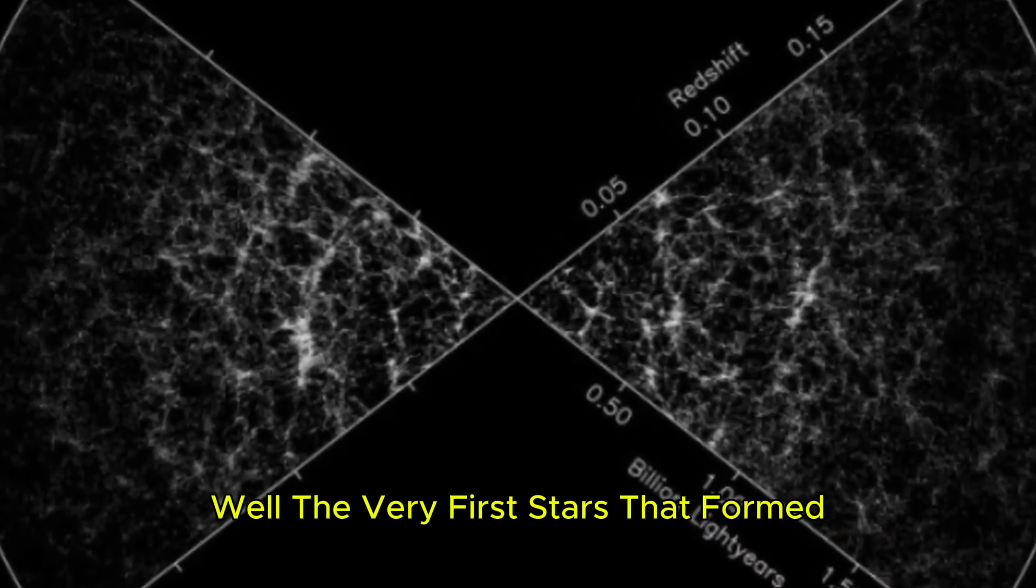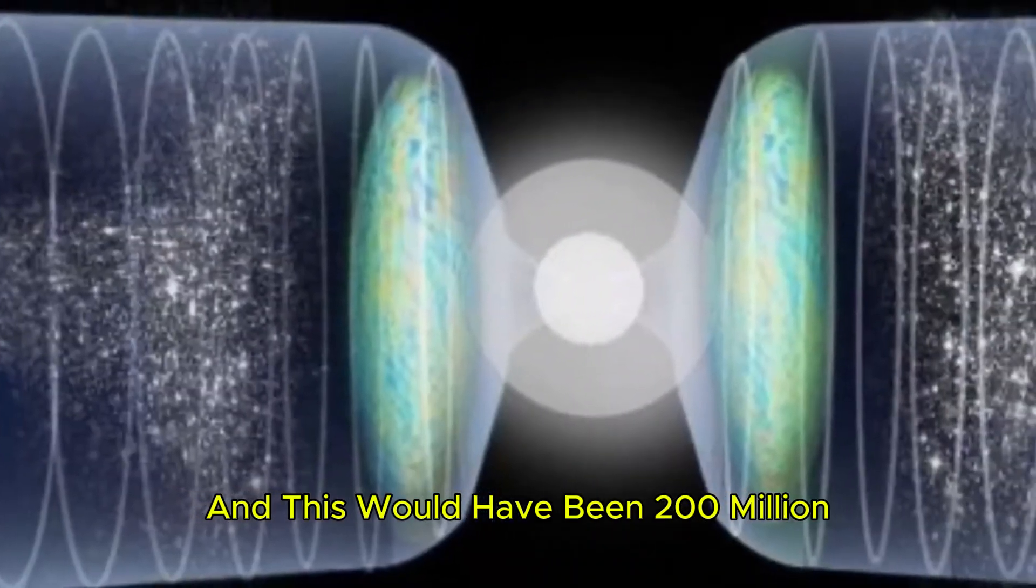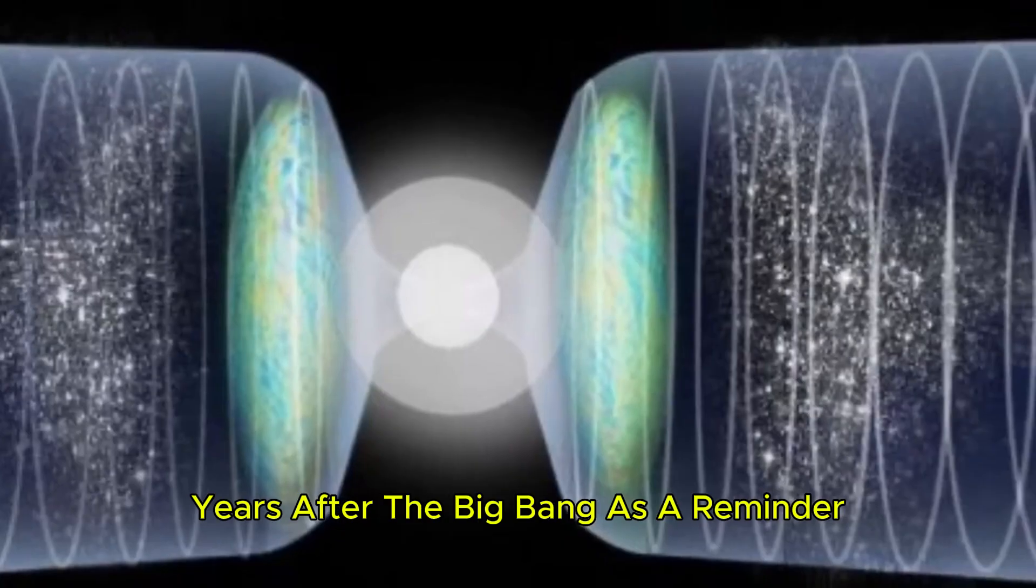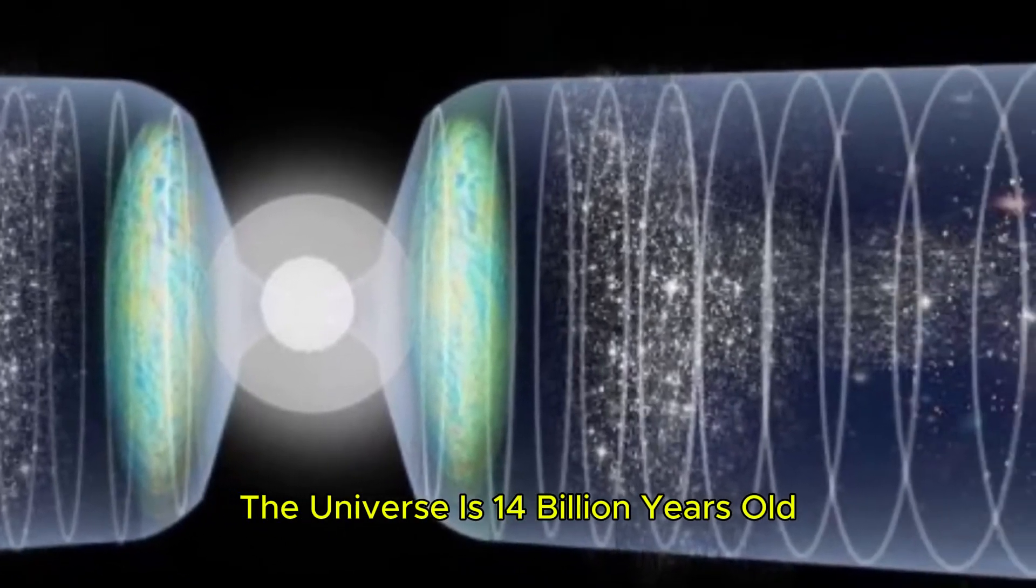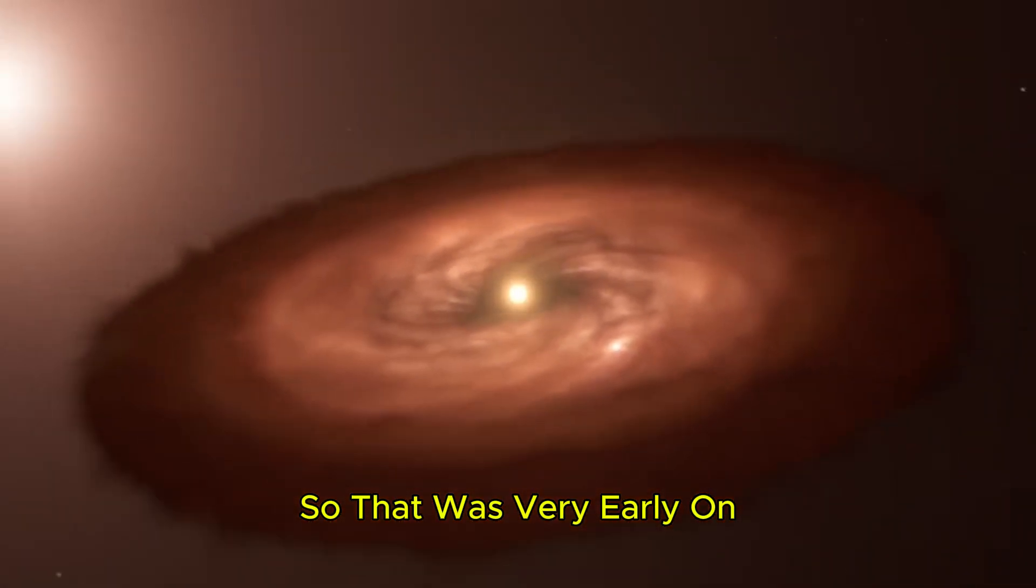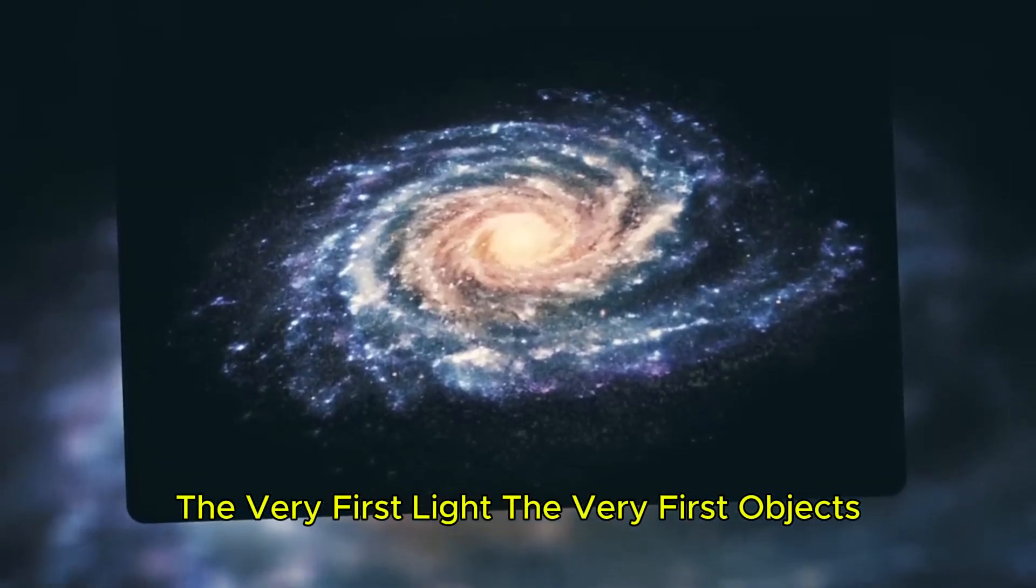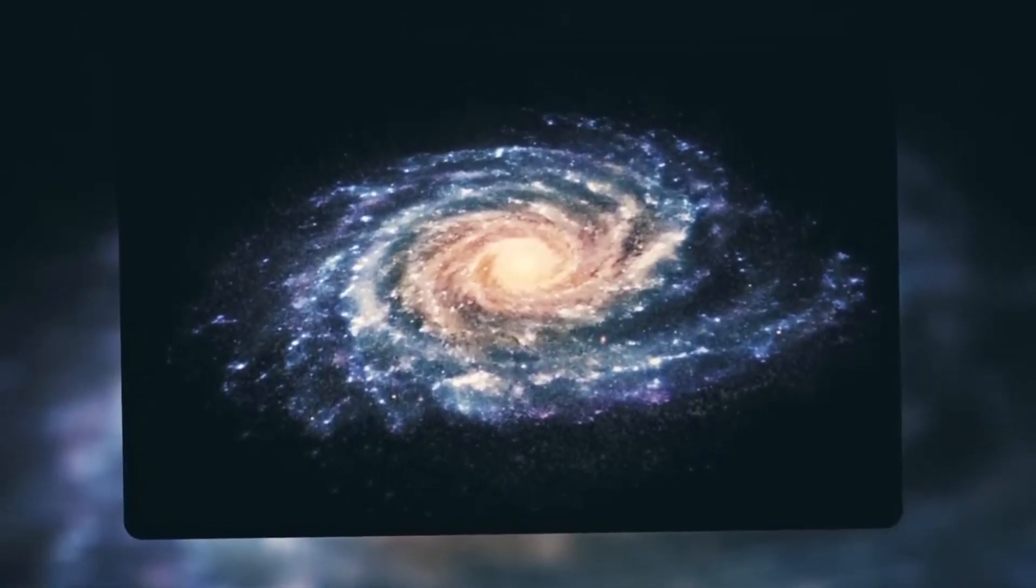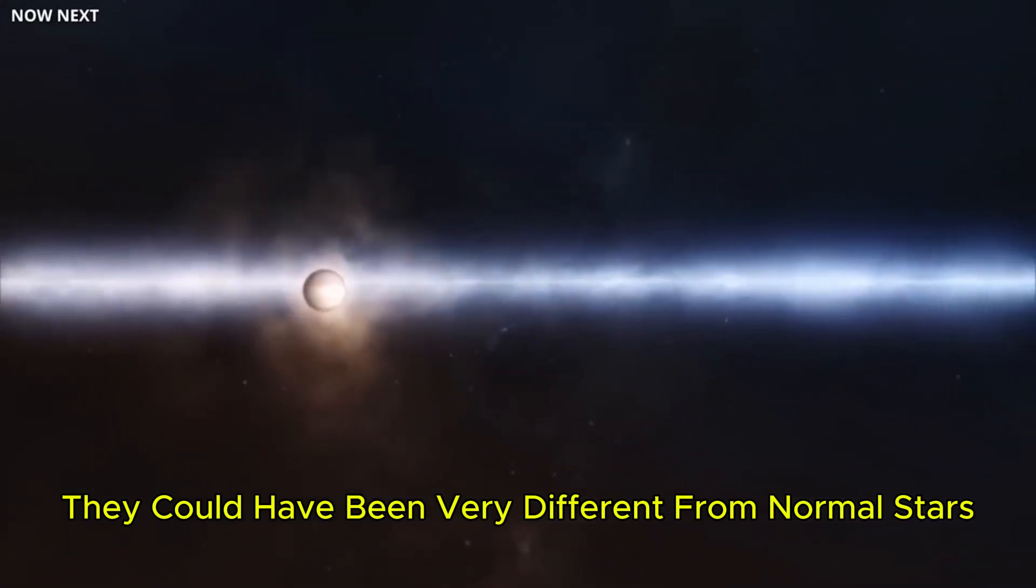Well, the very first stars that formed, and this would have been 200 million years after the Big Bang. As a reminder, the universe is 14 billion years old. So, that was very early on. The very first light, the very first objects. They could have been very different from normal stars.